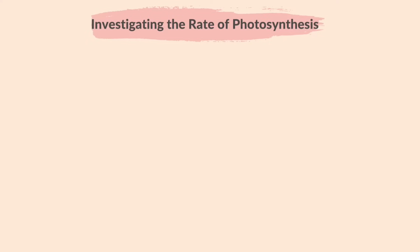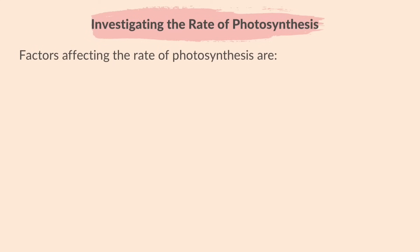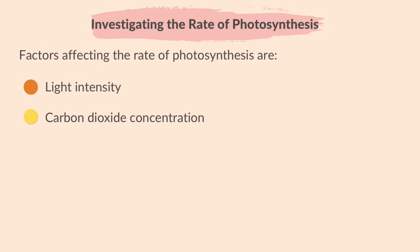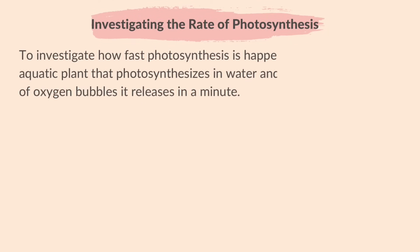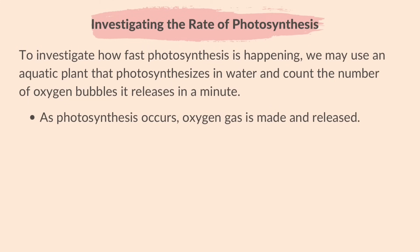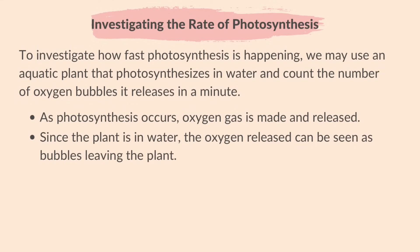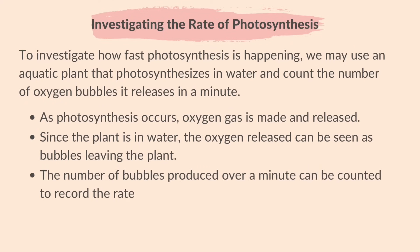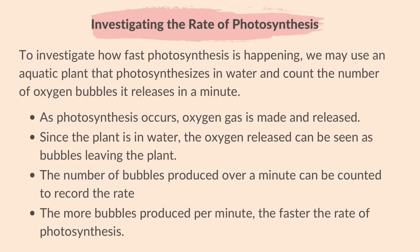Now that we've established that plants need chlorophyll, light, and carbon dioxide for photosynthesis, let's investigate the factors that affect the rate of photosynthesis: light intensity, carbon dioxide concentration, and temperature. To investigate how fast photosynthesis is happening, we may use an aquatic plant that photosynthesizes in water and count the number of oxygen bubbles it releases in a minute. As photosynthesis occurs, oxygen gas is made and released, and since the plant is in water, the oxygen released can be seen as bubbles leaving the plant. The more bubbles produced per minute, the faster the rate of photosynthesis.